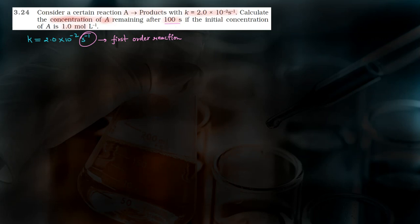First, let's write the formula. What is the formula for a first order reaction? K equals to 2.303 divided by T, multiplied by log of initial concentration of reactant R-naught divided by concentration of reactant R at any time T.